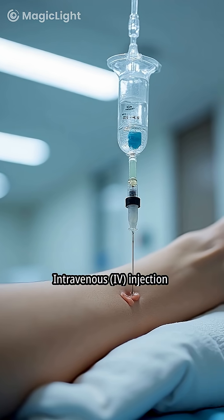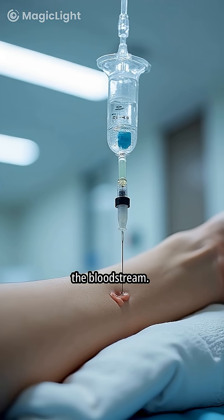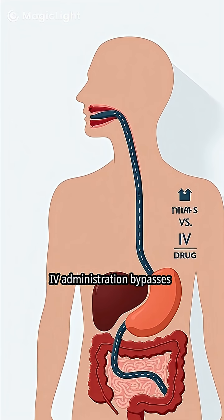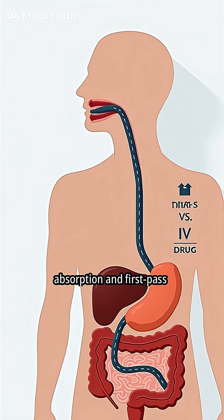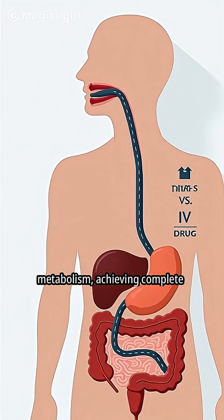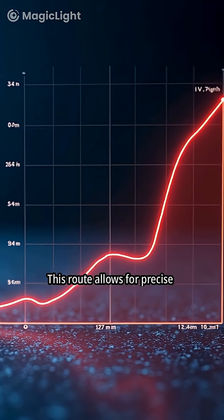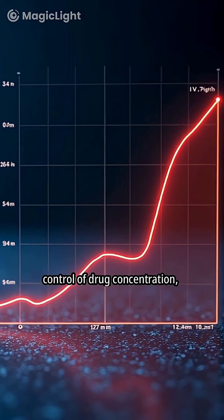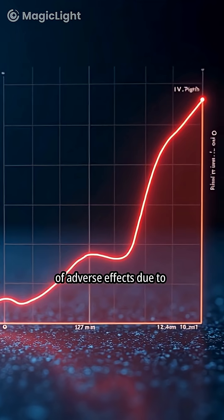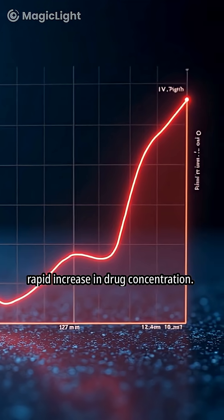Intravenous injection delivers drugs directly into the bloodstream. IV administration bypasses absorption and first-pass metabolism, achieving complete bioavailability. This route allows for precise control of drug concentration, but carries a higher risk of adverse effects due to the rapid increase in drug concentration.